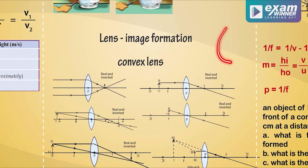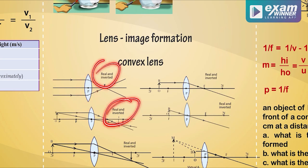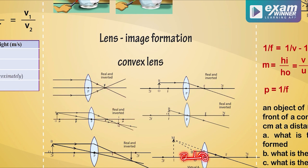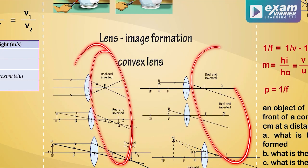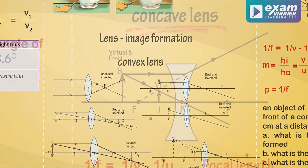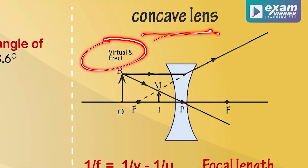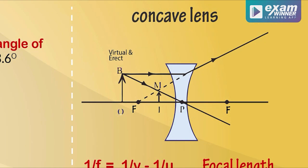For example, with a convex lens you can form a real inverted image. If you have a convex lens, you can see a real inverted image projected on a screen. With a concave lens, you can only see a virtual image — the image cannot be projected on a screen.